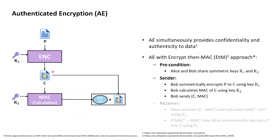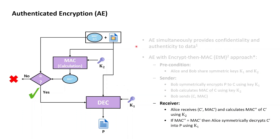Bob then, as a second step, takes the resulting ciphertext and symmetric key K2 and calculates a MAC tag — not of the plaintext itself, but of the ciphertext. Bob then sends both the ciphertext and the MAC tag of the ciphertext to Alice. Alice, as the recipient, receives something that she hasn't yet verified for authenticity, and thus treats what she receives as just some ciphertext and some MAC tag.